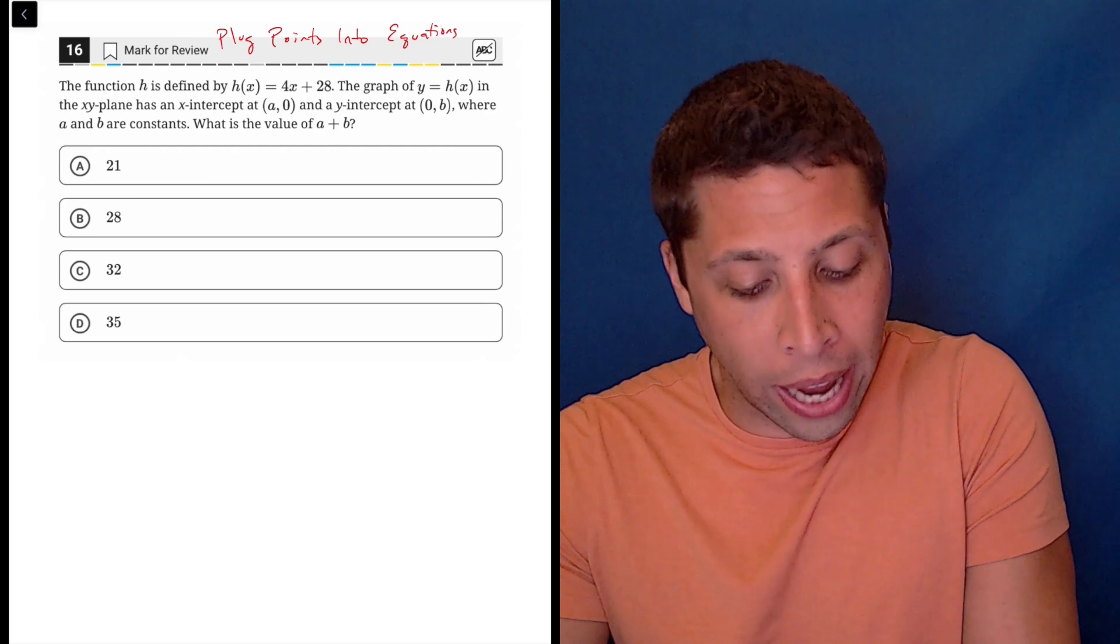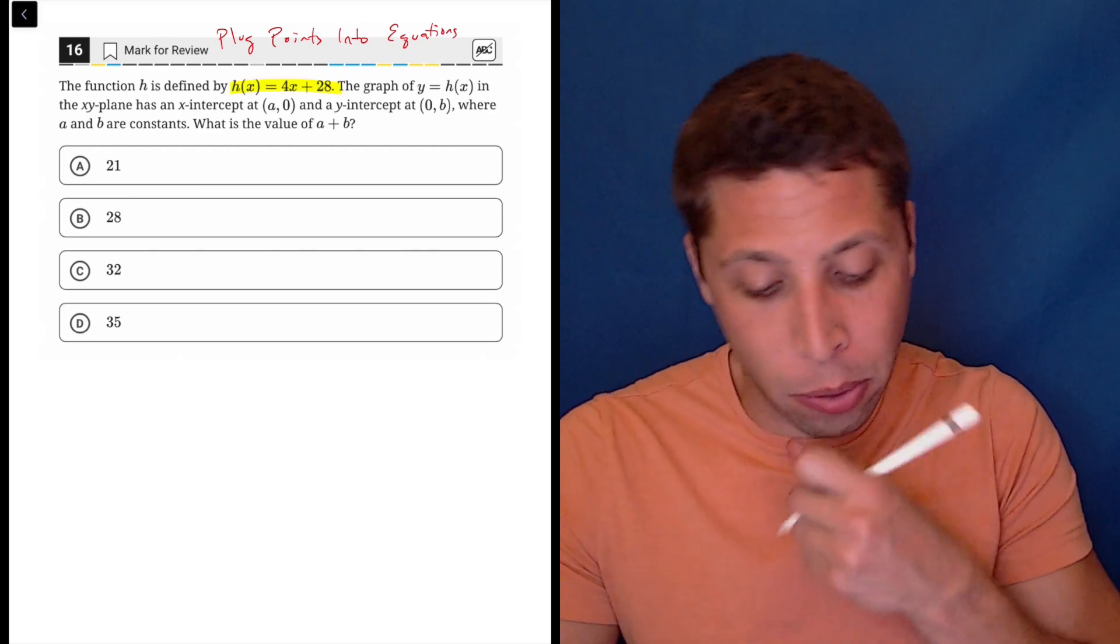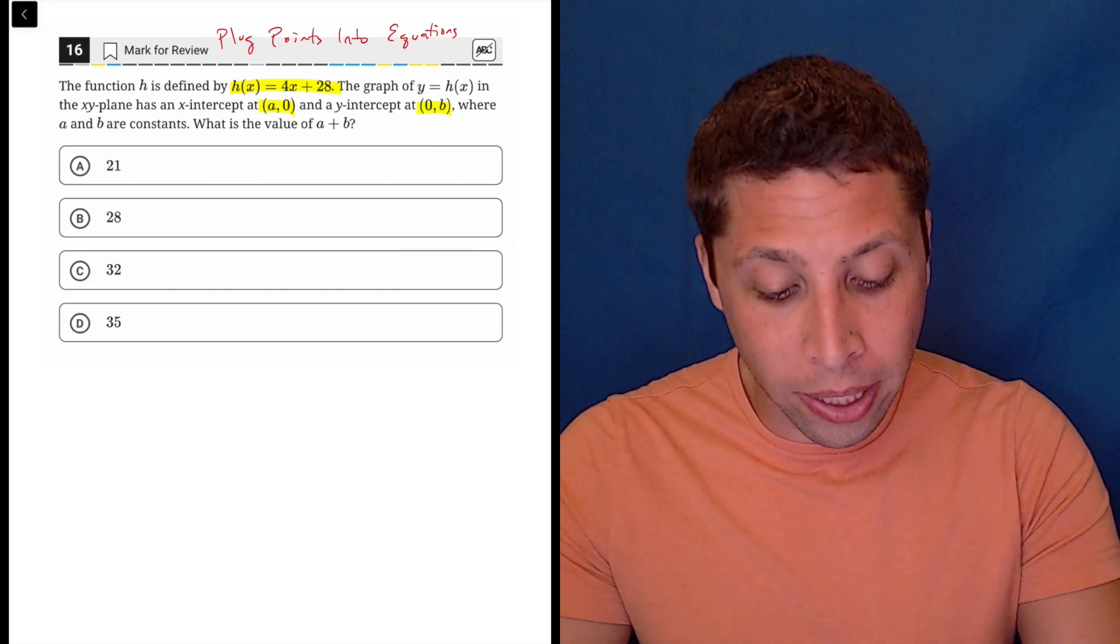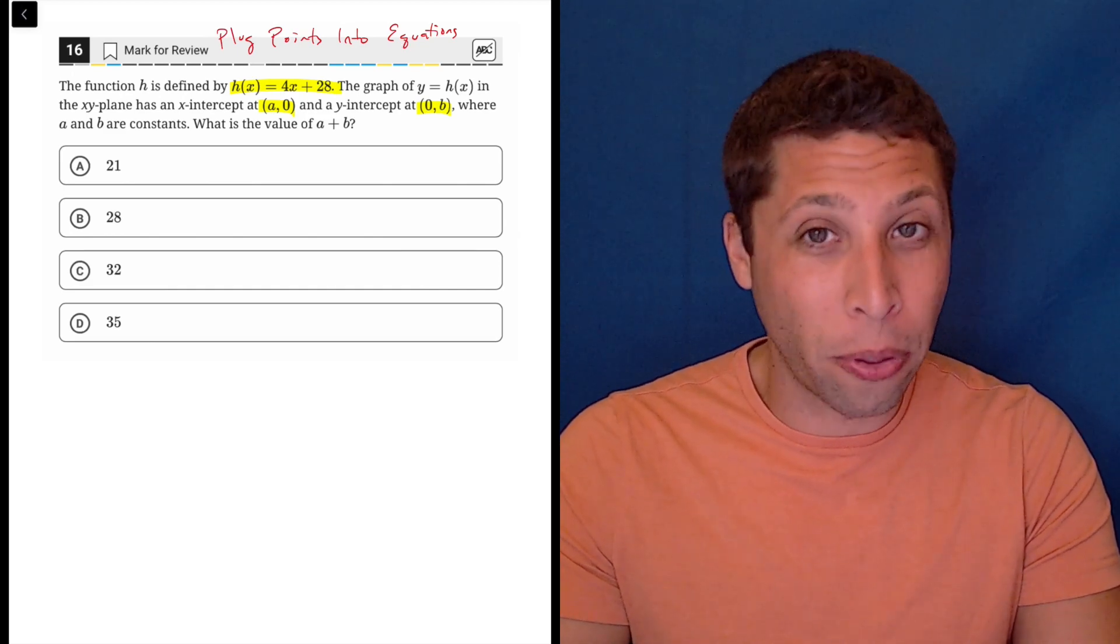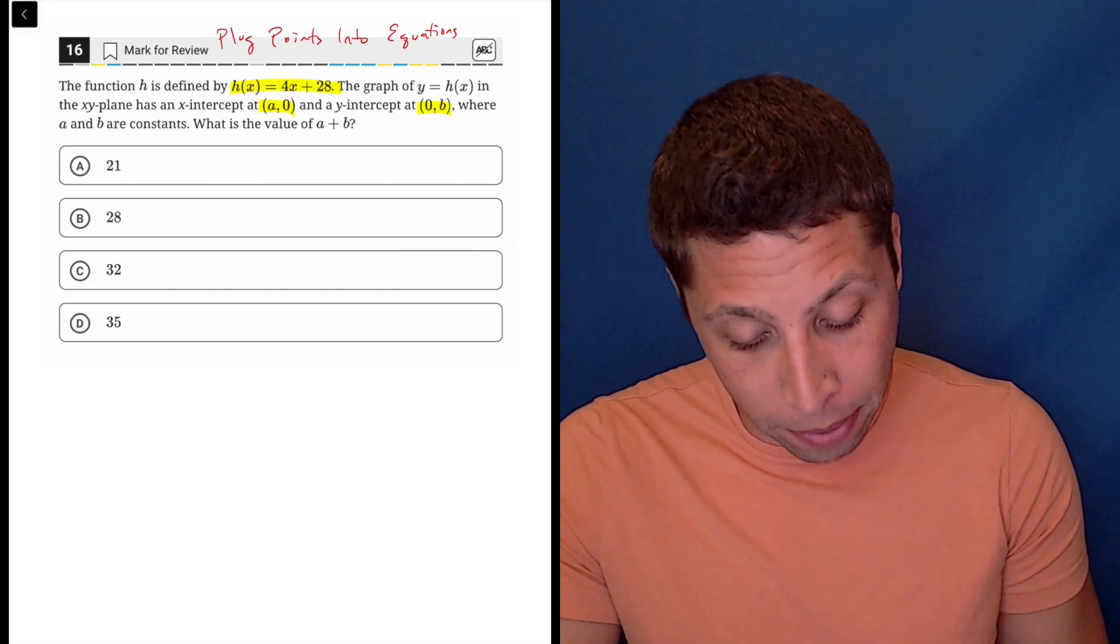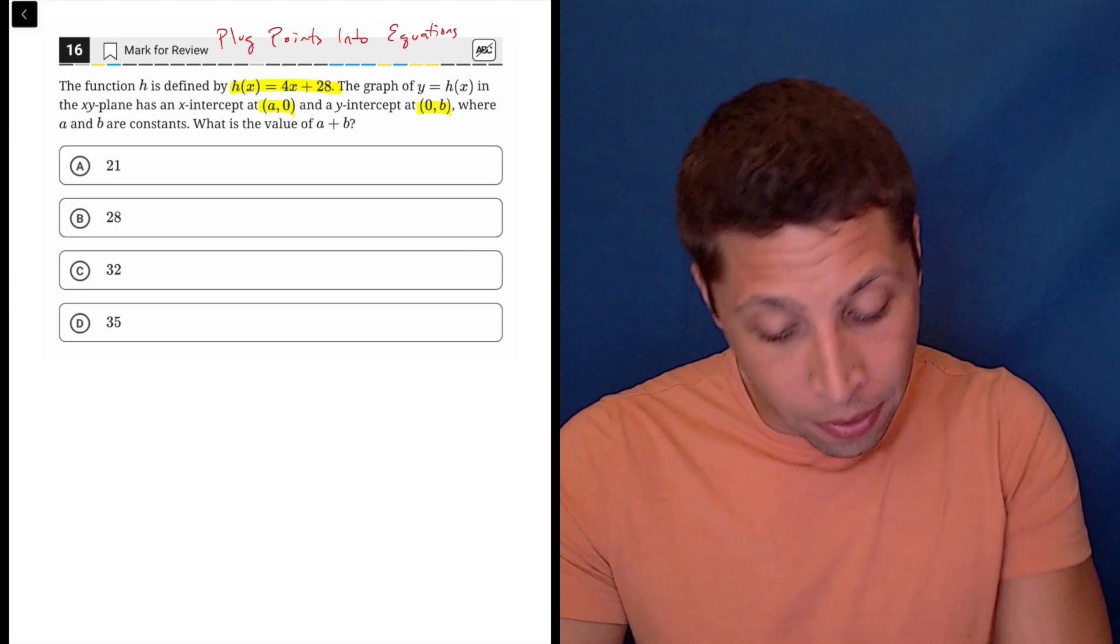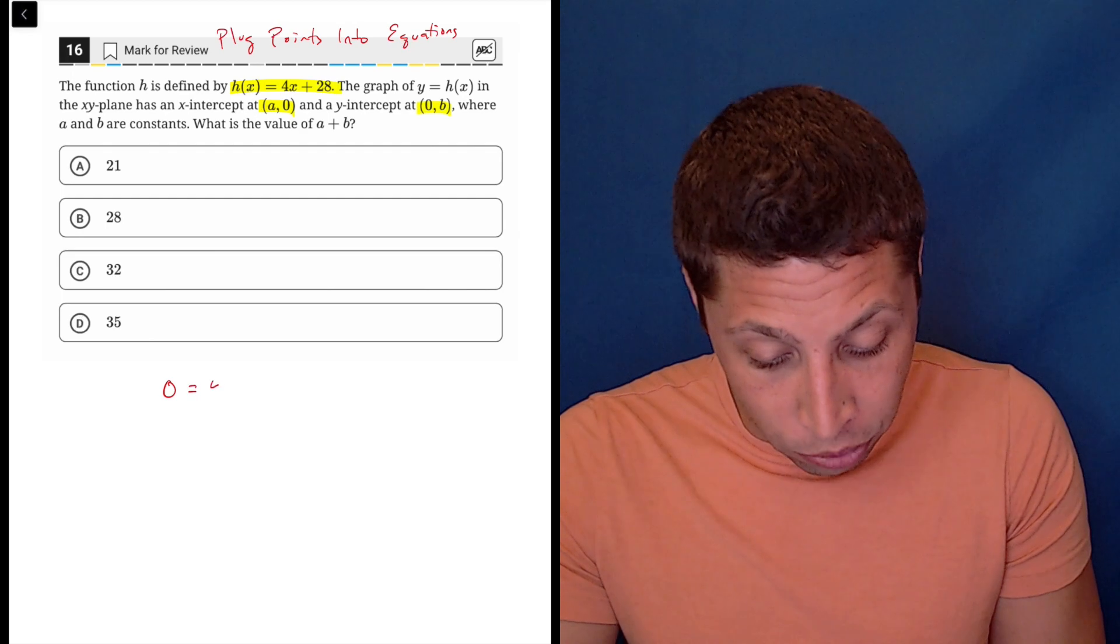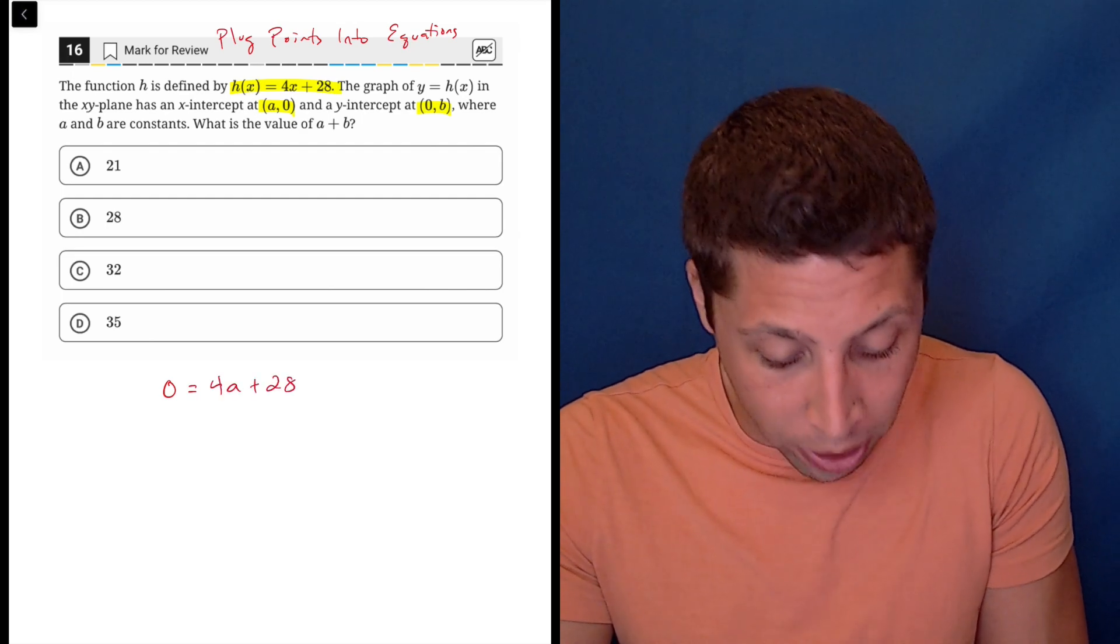It's so obvious that it's going to work. I have an equation, h of x equals 4x plus 28, and I have two points. They're asking for them, and they're really easy points to work with because they both involve a zero. So I would just take them and plug them in. So if I plugged in the a point, I would have zero as my y equals 4 times a plus 28.